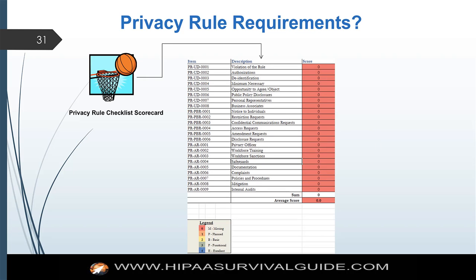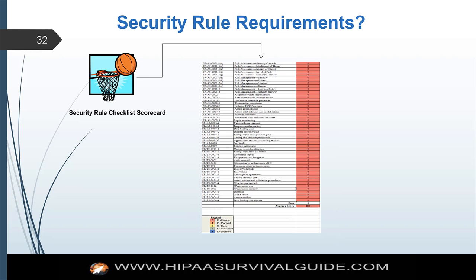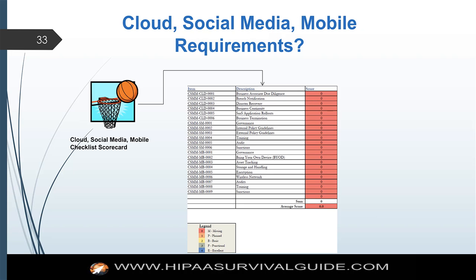Our methodology supports scorecards — you can't manage what you don't measure. We have scorecards that track every single requirement of the privacy rule so you can give yourself a rating: zero means it's missing, one means it's planned, two means we have a basic implementation, etc. So if an auditor, a court of law, or the management team wants to know where you are in your initiative across the three rules, you can reply via our scorecards: one for the privacy rule, one for the security rule, and one for cloud, social media, and mobile requirements.